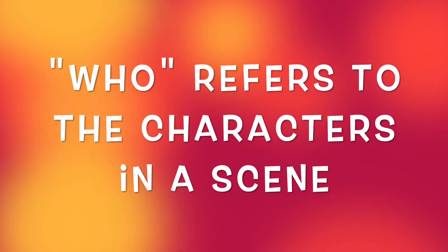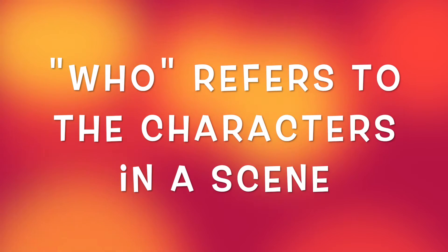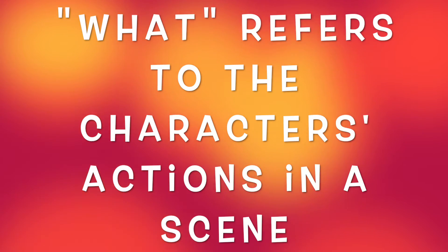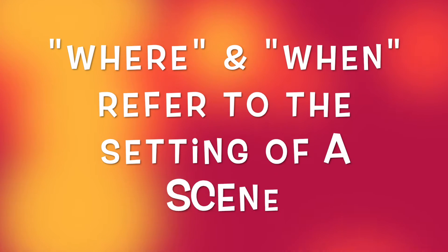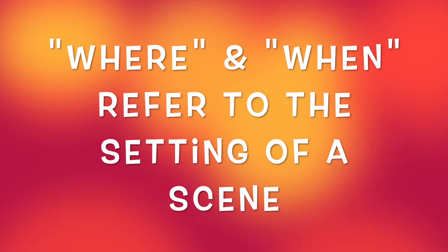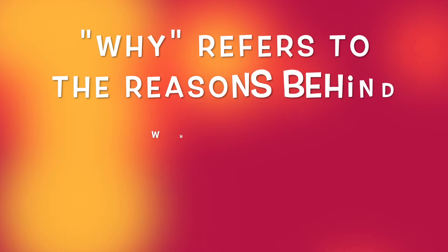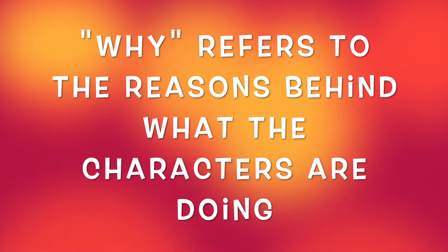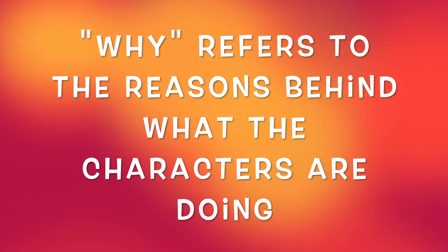Today we'll be focusing on the five W's in creative drama. The five W's are: Who — this refers to the characters in a scene. What — this refers to the characters' actions in a scene. Where and When — this refers to the setting of a scene, that is the place and the time. Why — this refers to the reasons behind what the characters are doing, their motivation and their objectives.